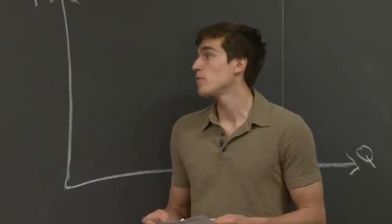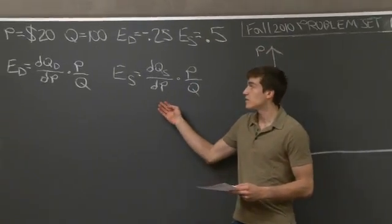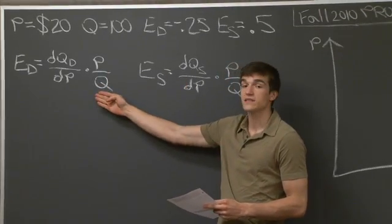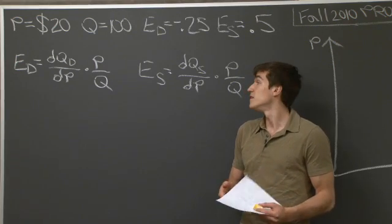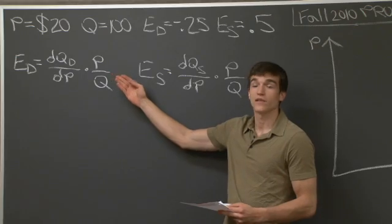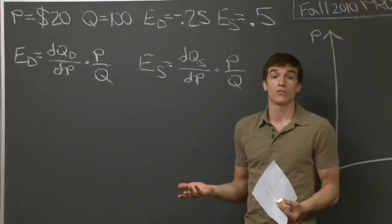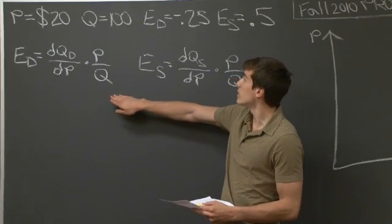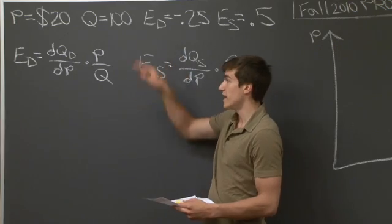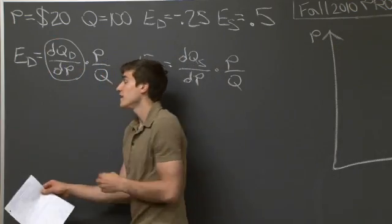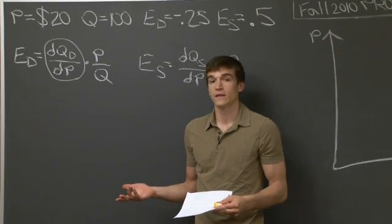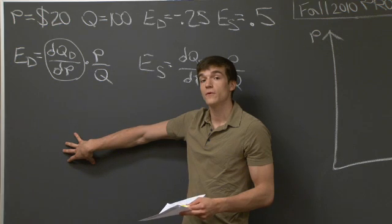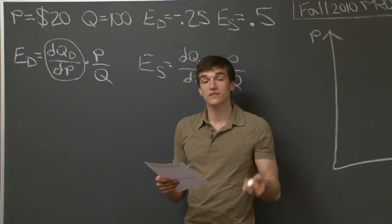Looking at the formal definition of elasticity of demand and elasticity of supply, we have three parts: the derivative of either the demand or supply function with respect to p — the own price of steel — plus the equilibrium price and the equilibrium quantity. So we are given, for the elasticity of demand, three variables: the price, the quantity, and the elasticity of demand. The only thing we don't know is the derivative of the demand curve with respect to p. If we can isolate this derivative, we can integrate to solve for what our demand curve is going to look like.